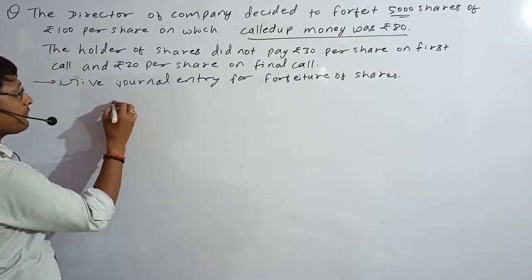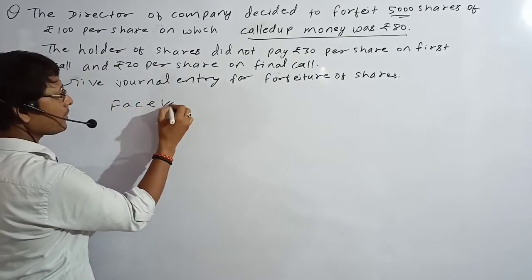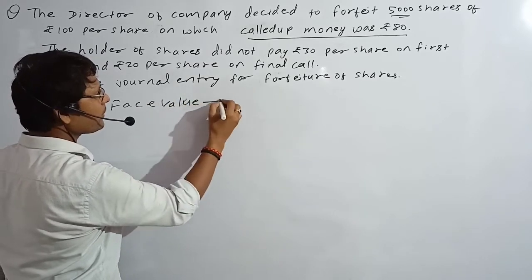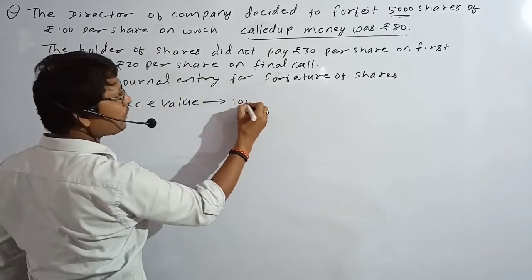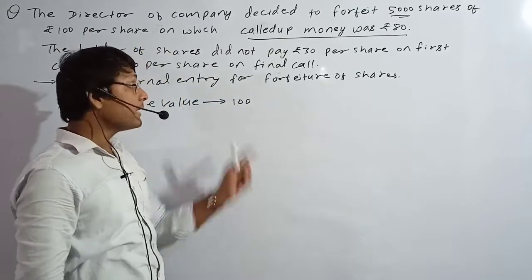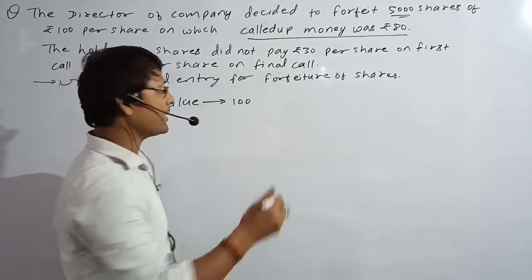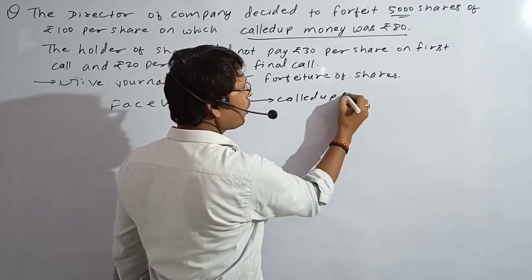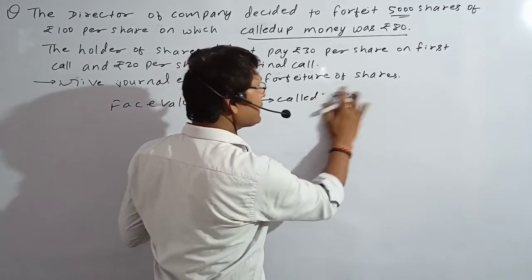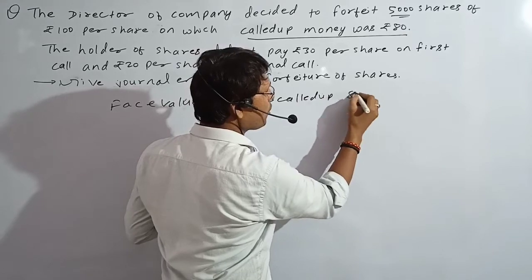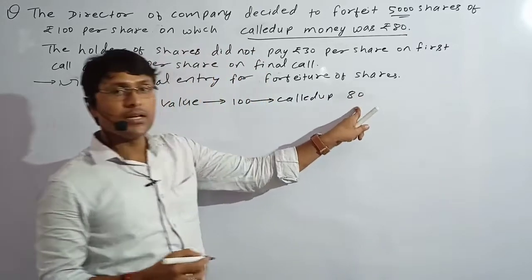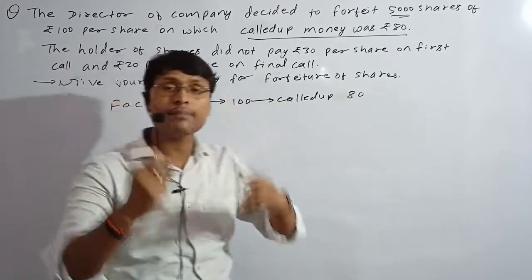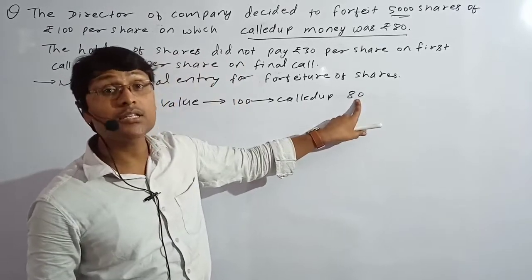Look at this company's face value — ₹100. The called-up amount is only ₹80. So we are only concerned with ₹80. The face value is ₹100 rupees, but the company did not ask for ₹100 — it only asked for ₹80 rupees.